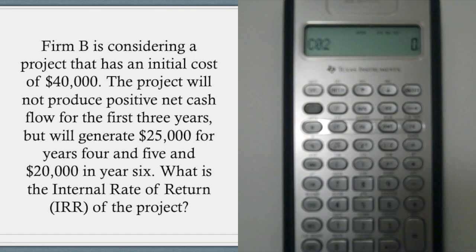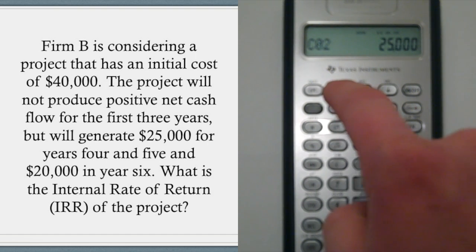And then if we hit down again, it'll say C02. So the next cash flow is the $25,000 for the fourth and the fifth year. So we can enter that in, and that's a positive cash flow. And we can hit enter.